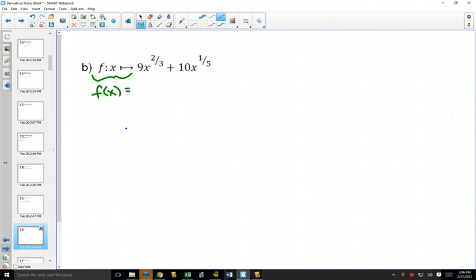So now when we do our derivative, if I bring the 2/3 out in front, 2/3 of 9 is 6. Subtract 1 from the exponent, and you'll get negative 1/3. Bring the 1/5 out in front, 1/5 of 10 is 2. Subtract 1 from the exponent, and you get negative 4/5.